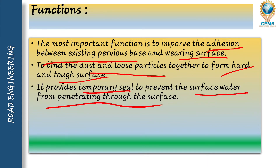The function of prime coat is that the most important function is to improve the adhesiveness between the previous base and the bearing surface, and to bind the dust and loose particles together to form a hard and tough surface. Prime coat will tighten the loose particles and make a tough surface. It provides a temporary seal to prevent surface water from penetrating through the surface, making the loose particles tougher and stronger.